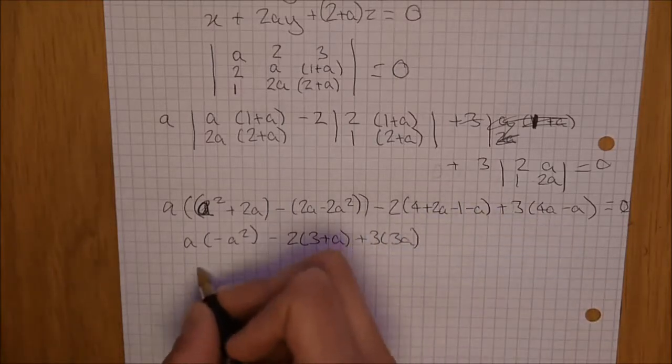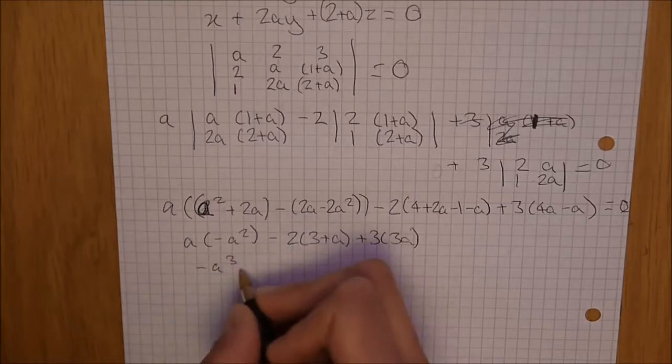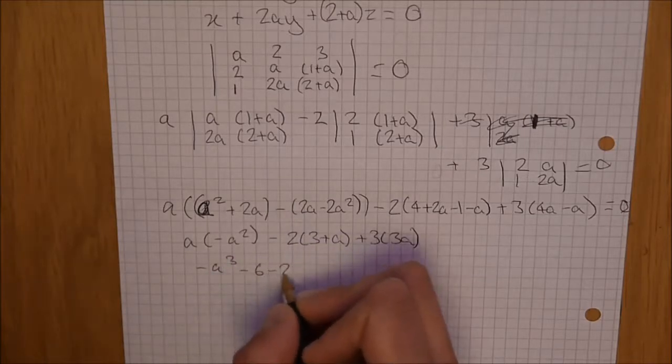Which gives us, if we cancel it even further, minus a squared minus 6 minus 2a plus 9a.